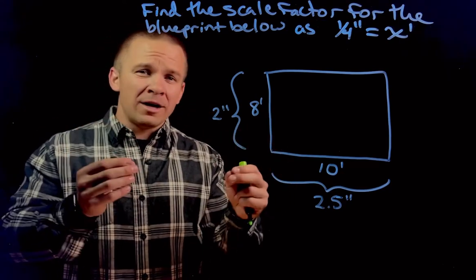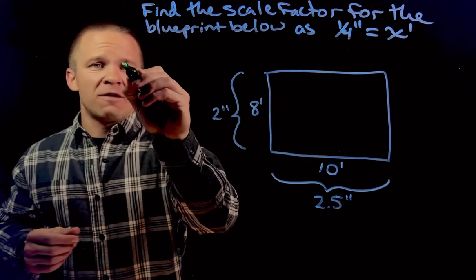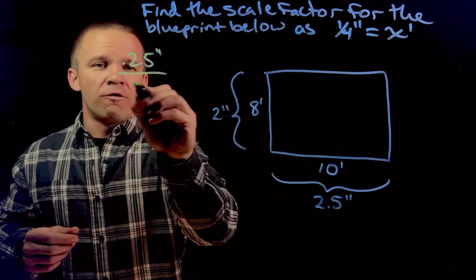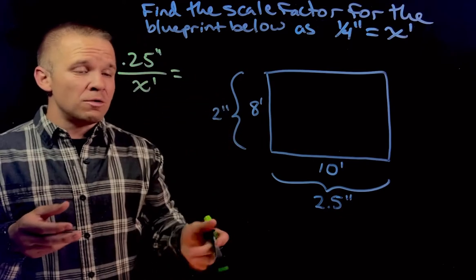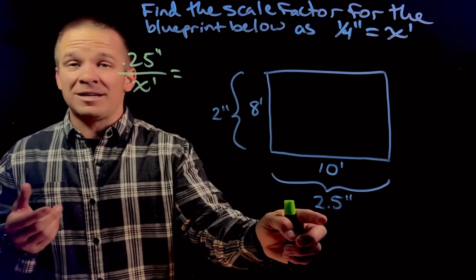So I'm gonna set up one ratio of my proportion as one quarter inch over X feet. So I'll have 0.25 inches over X feet. I can set that equal to either one of these guys paired up. I'll use the 8 and the 2 because then I'm not dealing with decimals.